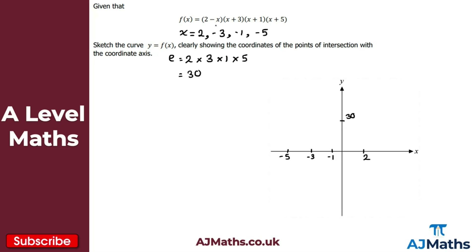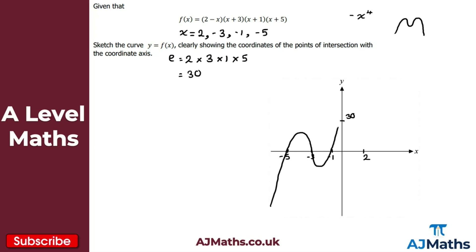For the general shape, I have minus x × x × x × x, giving minus x⁴. This is a negative quartic, so instead of the W-shape we get the M-shape — essentially a reflection in the x-axis. That means we start in the bottom left and finish in the bottom right. We go up through minus 5, back down through minus 3, up through minus 1, make sure we go through the y-intercept at 30, and then come back down through 2. That's our solution to the third question.